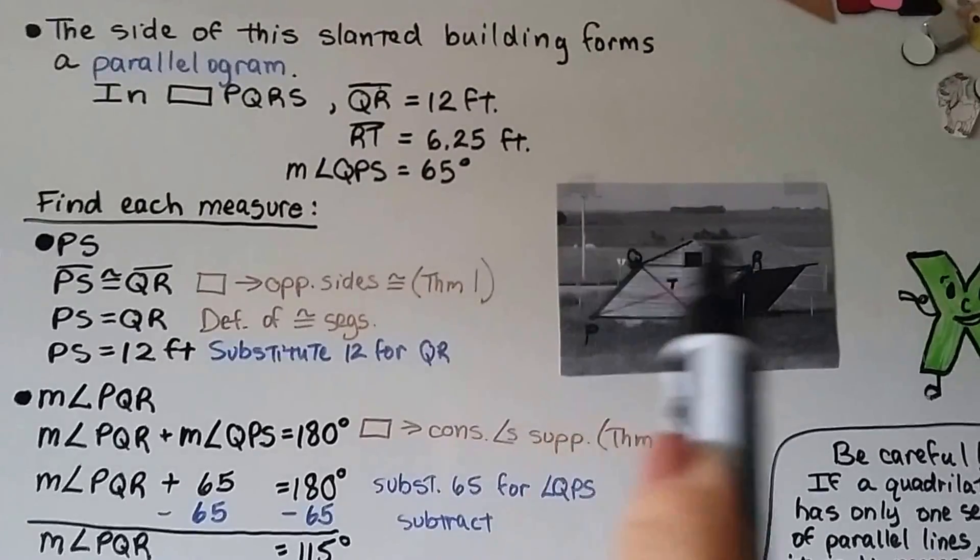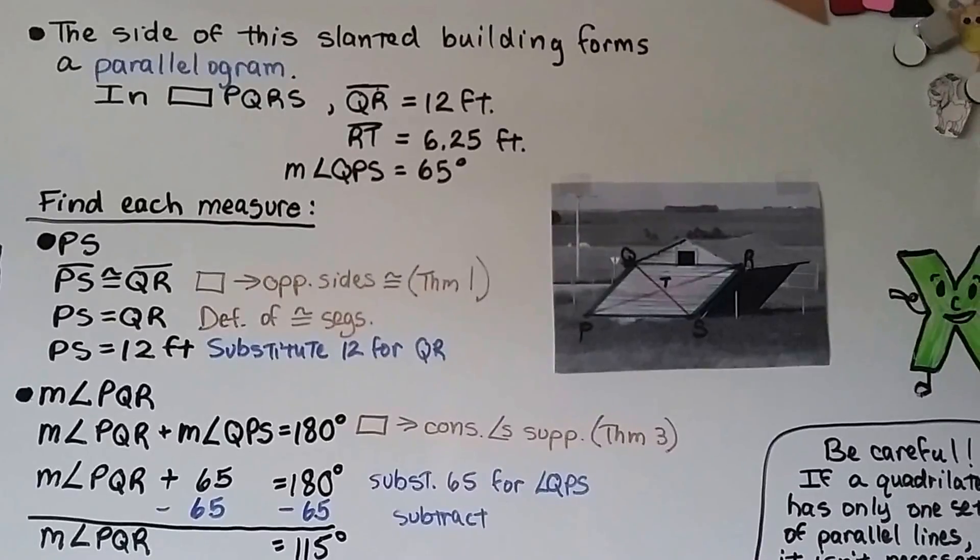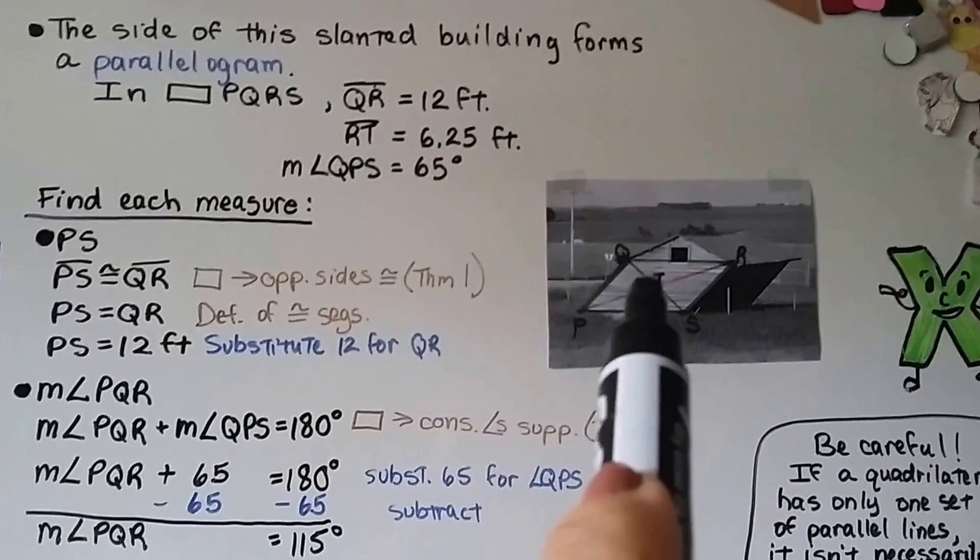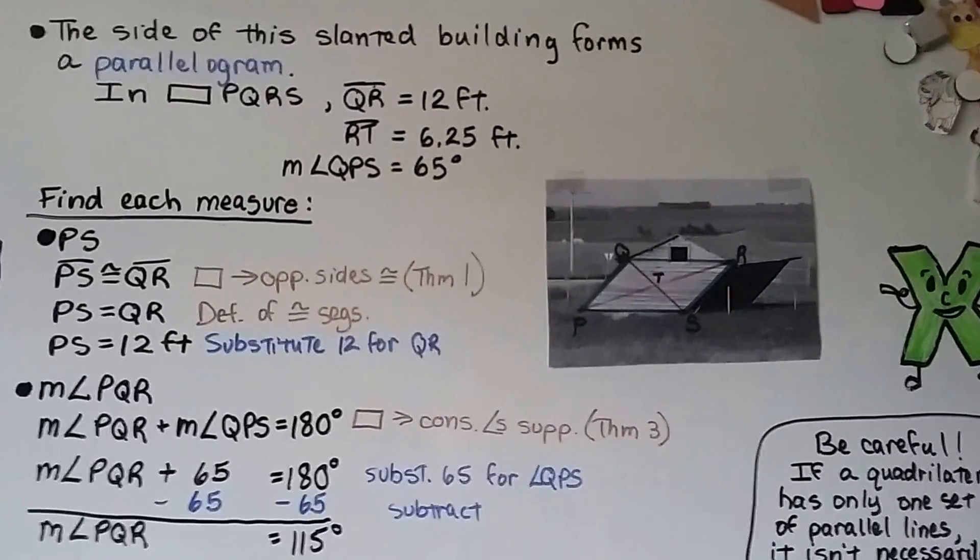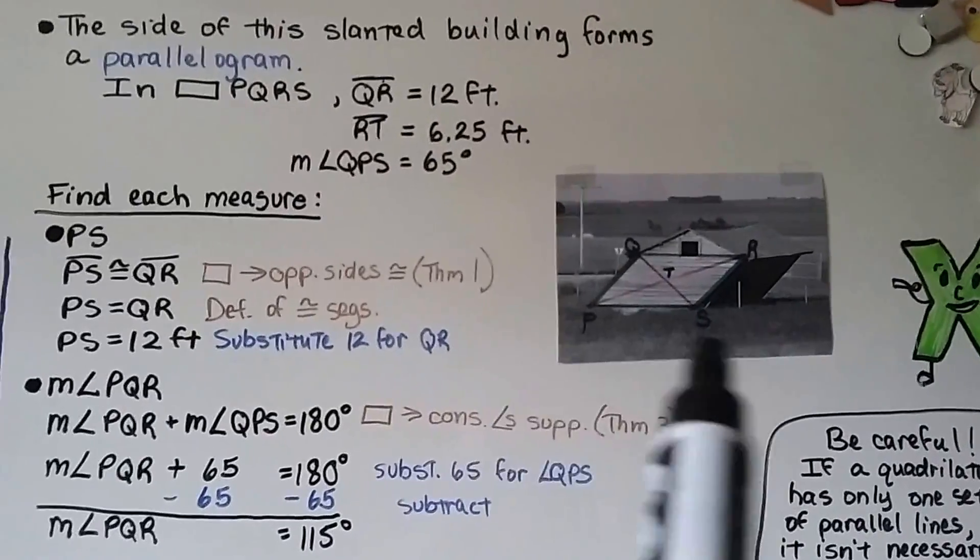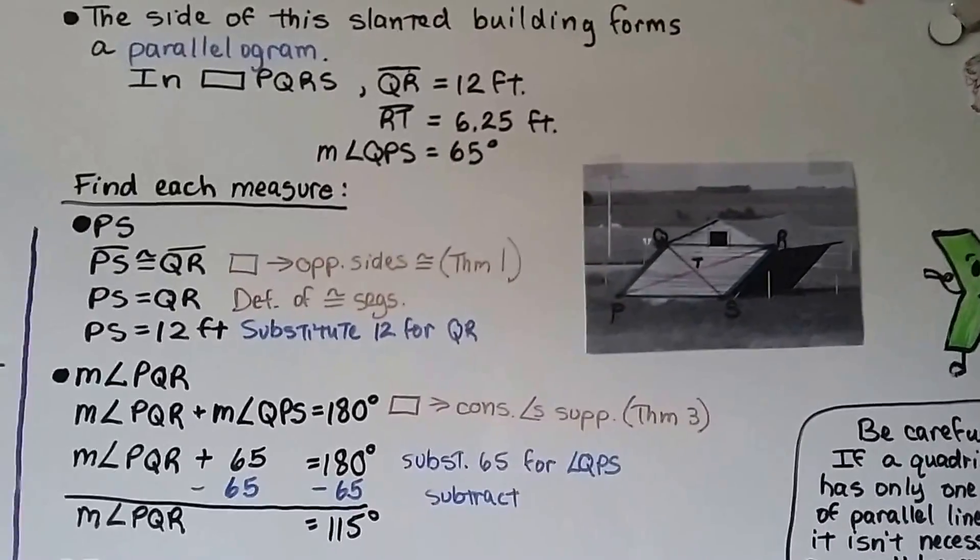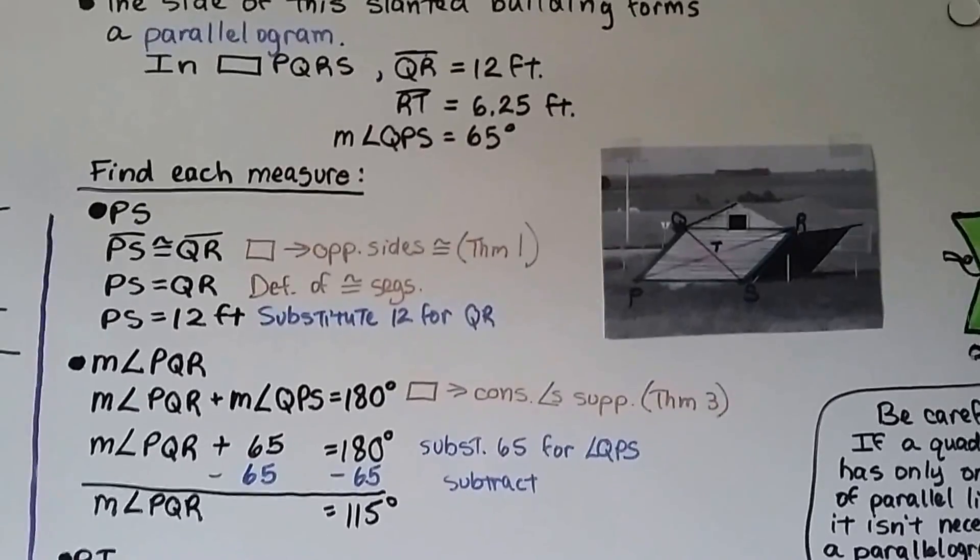And QR, this top line, is 12 feet. RT from this point to the center is 6.25. And the measure of angle QPS, so it's this one, is 65 degrees. We need to find each measure.